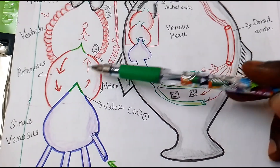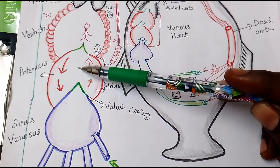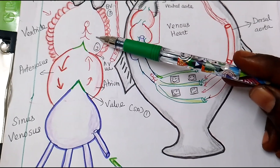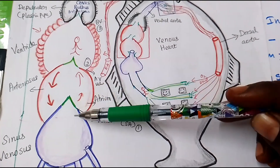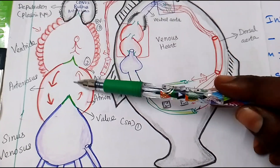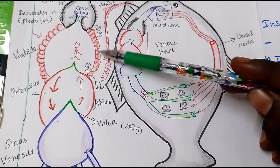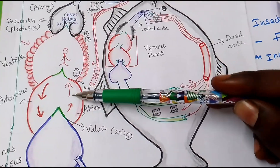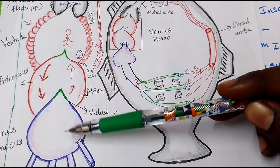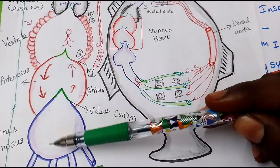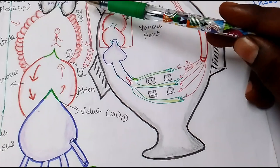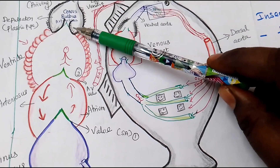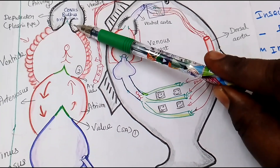The atrium has a valve opening into the ventricle called the AV valve. The fish has a two-chambered heart. Below the sinus venosus is a separate apparatus, and in the ventricle there is a structure called the conus arteriosus.